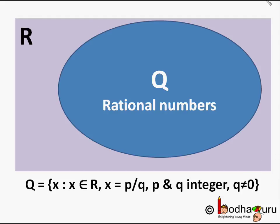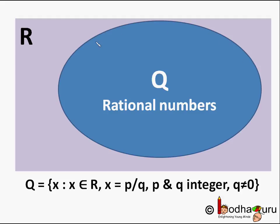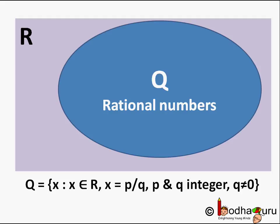And within that, this blue part represents the set of all the rational numbers, that is set Q. We say Q = {x : x ∈ R, x = p/q where p & q are integers and q ≠ 0}.